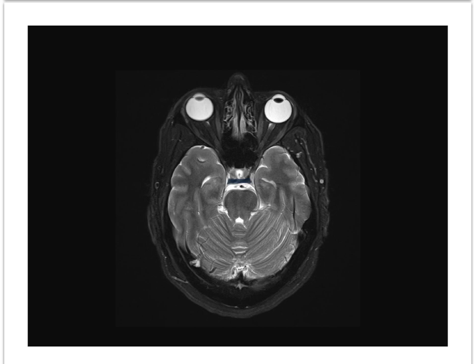Here at the uppermost level of the pons we see the 4th ventricle tapering superiorly. These are the temporal horns of lateral ventricles. Note the change in surface texture between the broad cerebral gyri above and lateral to the tentorium line, and the thinner, more parallel arrangement of folia of the cerebellum posterior and medial to the tentorium.